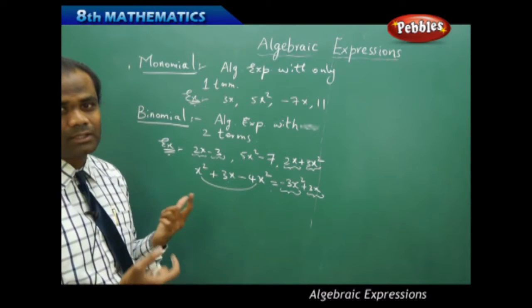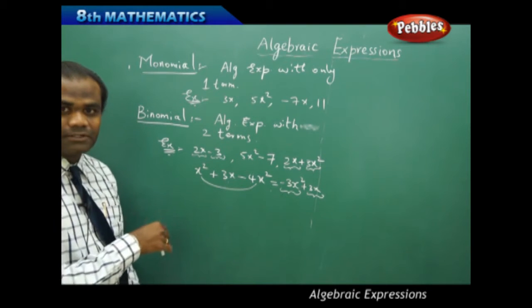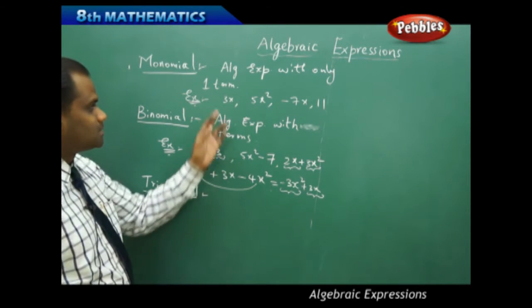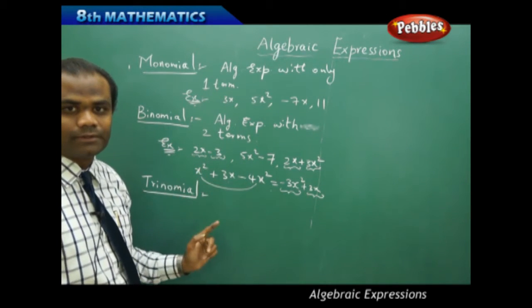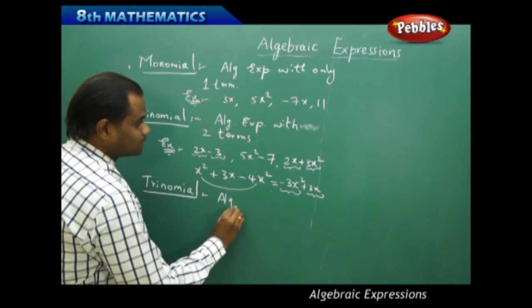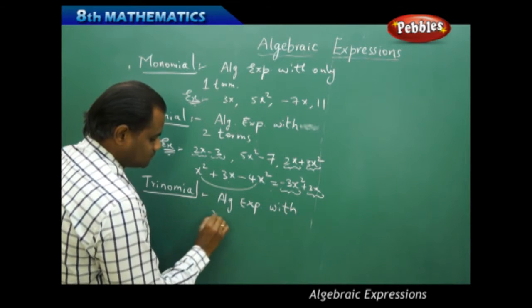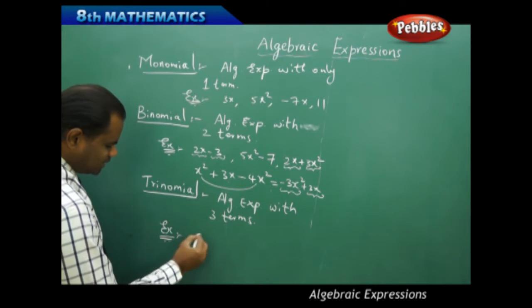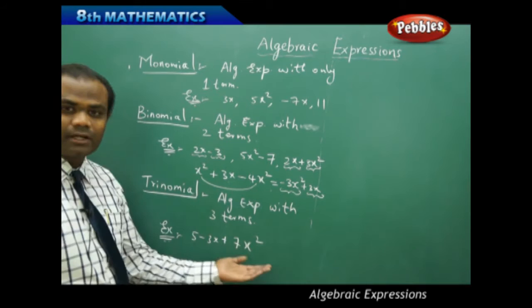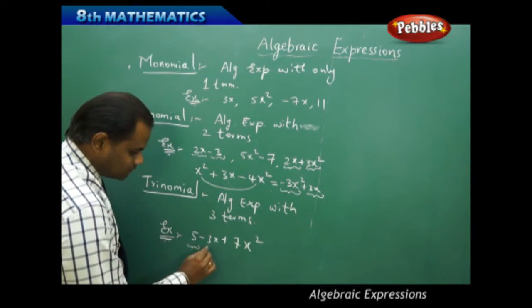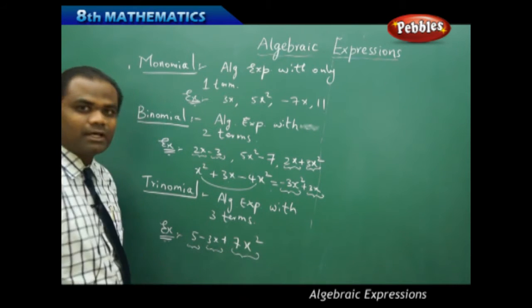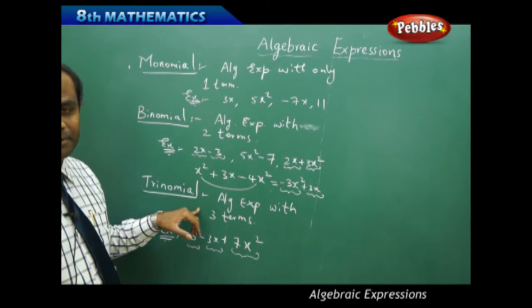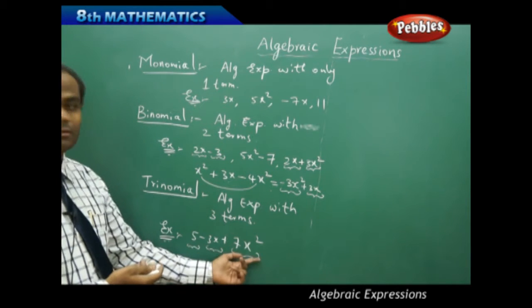Now that monomial and binomial have been discussed, the third type is trinomial. An algebraic expression with one term is a monomial, two terms is a binomial, so three terms is a trinomial. For example, 5 minus 3x plus 7x squared is a trinomial because it has three terms: the first term is 5, the second term is negative 3x, and the third term is 7x squared.